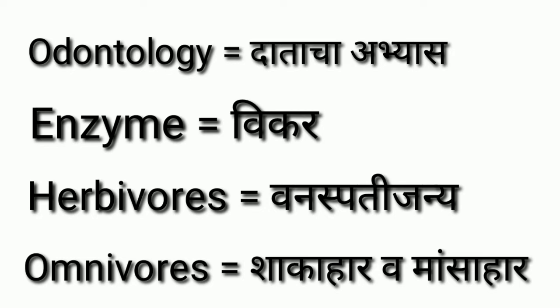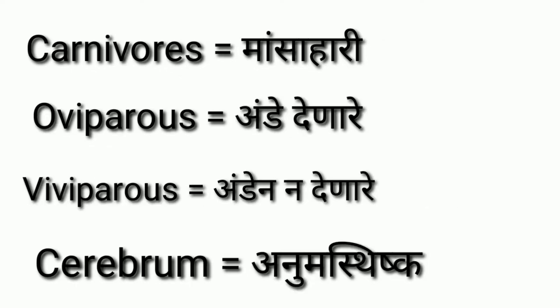Omnivores eat both types. Next word: Carnivores means masahari (meat-eating). Oviparous means ande dhenne re (egg-laying animals). Viviparous means ande na dhenne re (non-egg-laying animals). Cerebrum means anumastiksh.